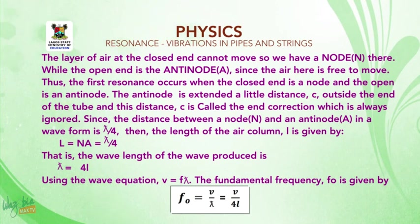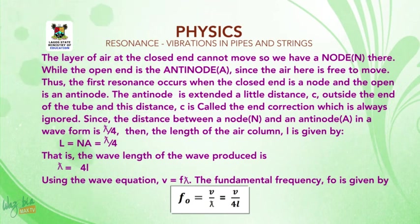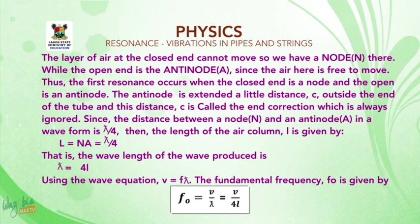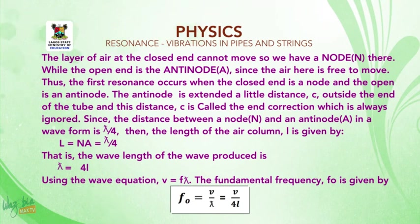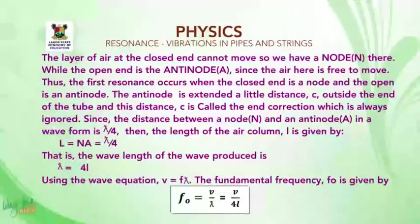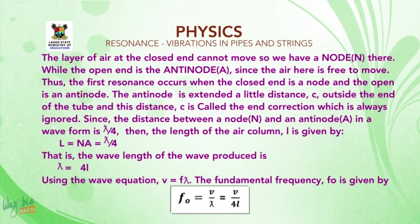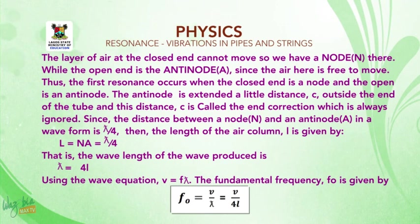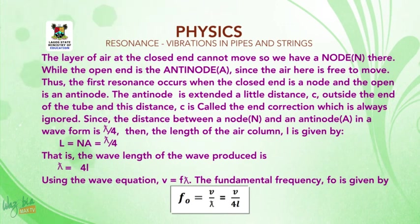Thus, the first resonance occurs when the closed end is a node and the open end is an anti-node. The anti-node is extended a little distance C outside the end of the tube. And this distance C is called the end correction, which is always ignored. Since the distance between a node N and an anti-node A in a waveform is one quarter of a wavelength, then the length of the air column L is given by L = NA = λ/4. That is, the wavelength of the wave produced is given by λ = 4L.